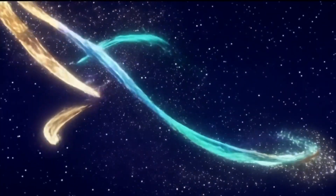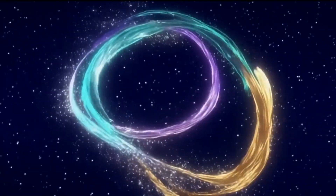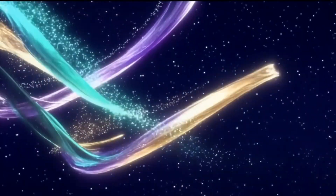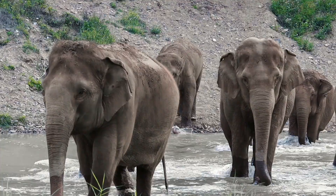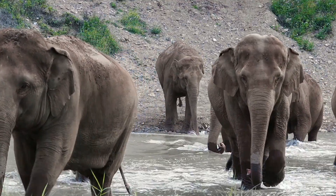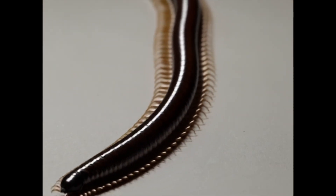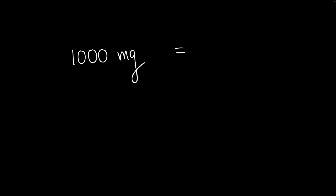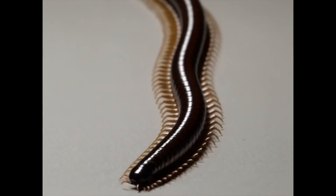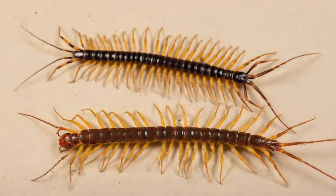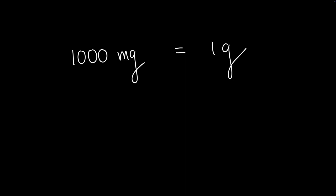One way to remember the difference between larger and smaller metric prefixes, even if their exponents look similar, is by using visual comparisons. When you think of kilograms, think of how big elephants are — you would only need 1 elephant, or 1 kilogram, to equal 1000 grams, the smaller base unit. When you think of milligrams, think of how small millipedes are — you would need 1000 millipedes, or 1000 milligrams, to equal 1 gram, the larger base unit. And since millipedes have more legs than centipedes, they represent a smaller unit, so you would need more millipedes (1000 milligrams) than centipedes (100 centigrams) to equal 1 gram.